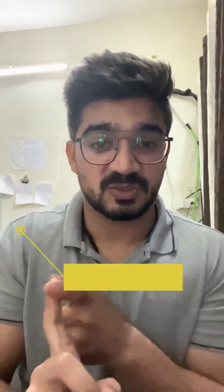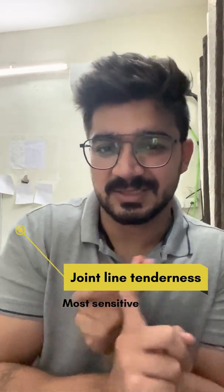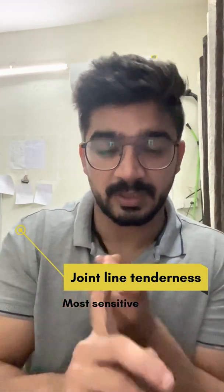First, we examine the patient: we look for laxity and joint line tenderness. Joint line tenderness is the most sensitive finding in meniscus tear. Locking and catching sensation also tells us there is a tear. Next, we perform the McMurray test — internal and external rotation — to rule out a meniscal tear.